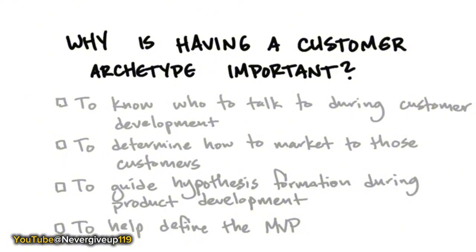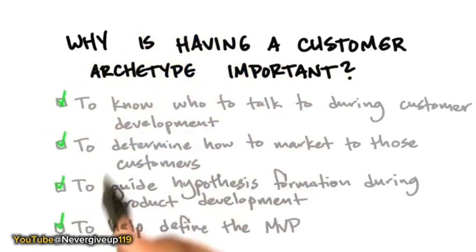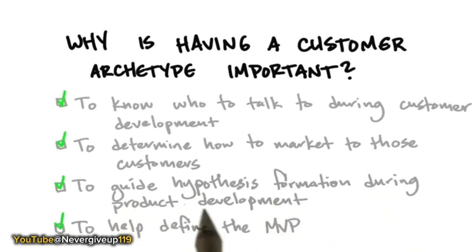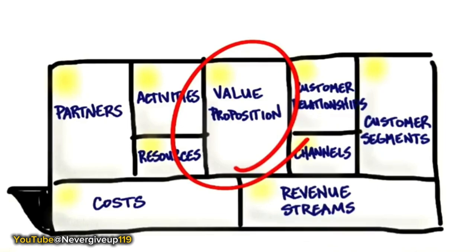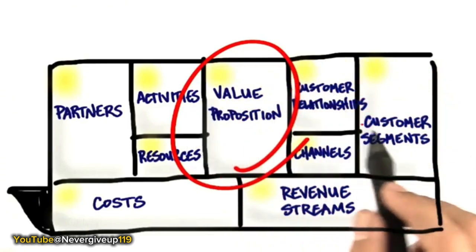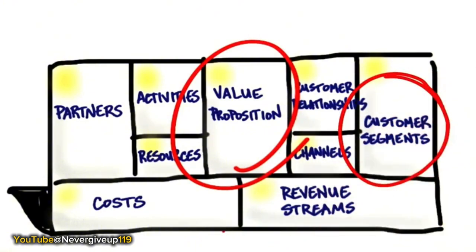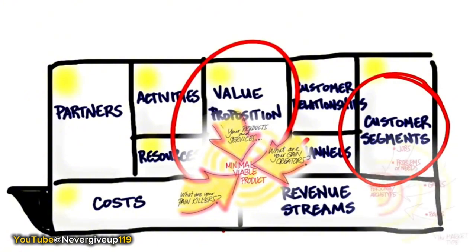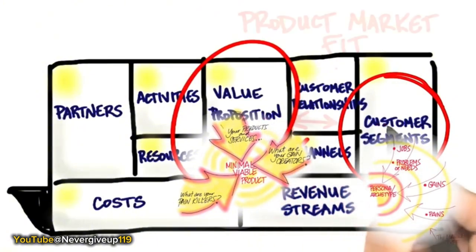Having a customer archetype in mind is really important for all of the following: to know who to talk to during customer development; to determine how to sell and market to these customers; to guide how you form hypotheses during product development; and to help define the minimum viable product. Knowing the customers and who they are will be immensely valuable. Understanding the three components of value proposition works together with understanding the three components of customer segment — value proposition gives you the minimum viable product, and customer segments give you the customer archetype or persona. Together, this equals product market fit.